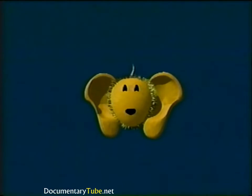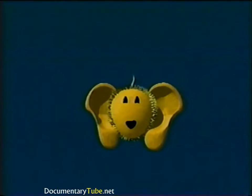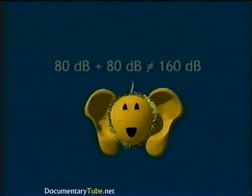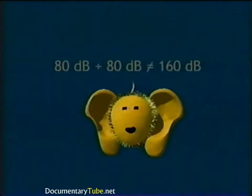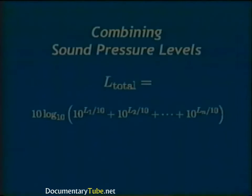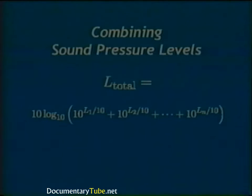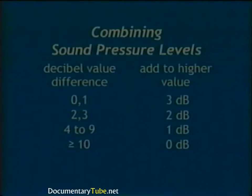Sound pressure level is often represented by a capital L. When combining sound pressure levels, it is not a simple matter of algebraically adding numbers — 80 dB plus 80 dB does not equal 160 dB. Because the decibel scale is logarithmic, to combine decibel values each must be converted to a linear scale, added, and then converted back to a logarithmic scale, where L1, L2, up to Ln represent the n sound levels to be combined.